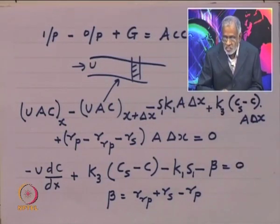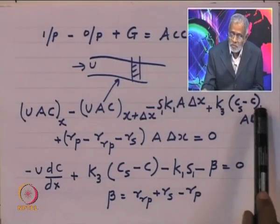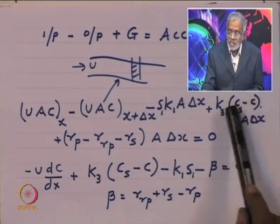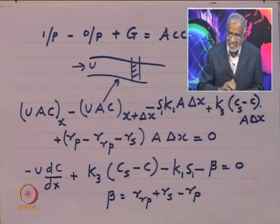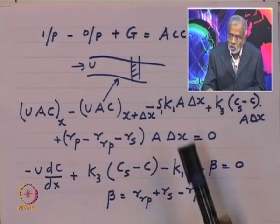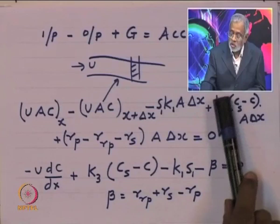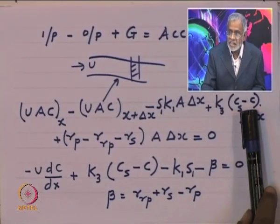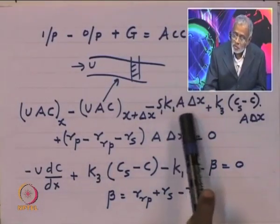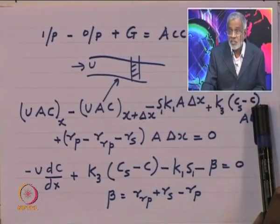The next term, k3 times (Cs minus c), represents the driving force for re-aeration. Cs is the solubility of oxygen in water, c is the actual oxygen concentration, so (Cs − c) is the driving force. k3 is the rate constant for re-aeration. So much oxygen gets consumed due to the pollution load, and so much oxygen is supplied by natural re-aeration.